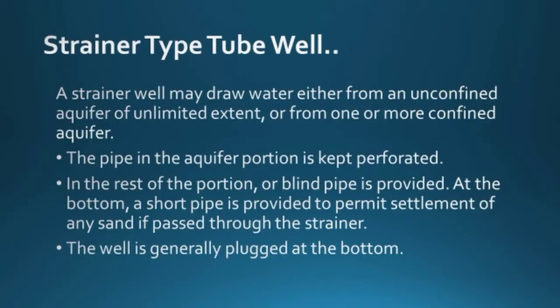The strainer well may draw water either from an unconfined aquifer of unlimited extent or from one or more confined aquifers. The pipe is kept perforated only in the aquifer portion; in the rest, a blind pipe is provided. At the bottom, a short pipe is provided to permit settlement of any sand that passes through the strainer, and the well is generally plugged at the bottom.